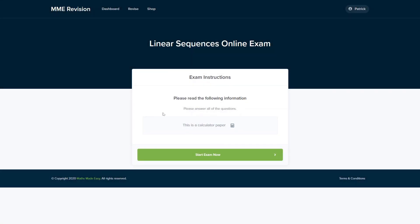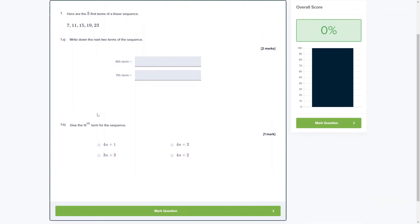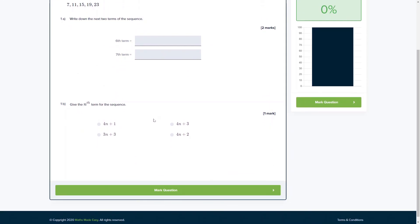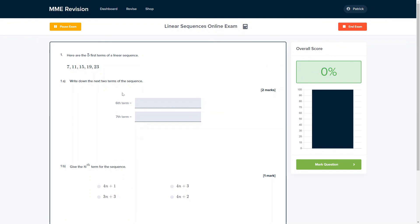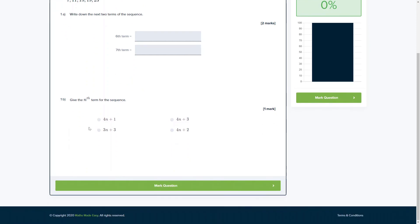If you want to practice some linear sequences exam style questions, you can do so with our online exam. This is available through our revision platform. If you take the test, you'll find loads of different questions to have a go at, a variety of different question types, all of which you'll receive instant feedback on. So this is a really good way of keeping track of your progress, finding out where you're going wrong, and a good way to make sure you can improve in time for your actual exam.